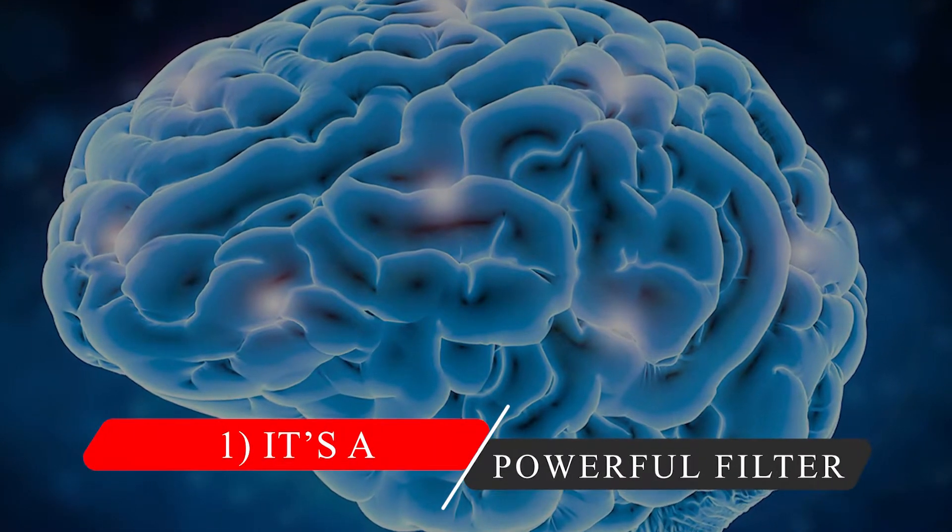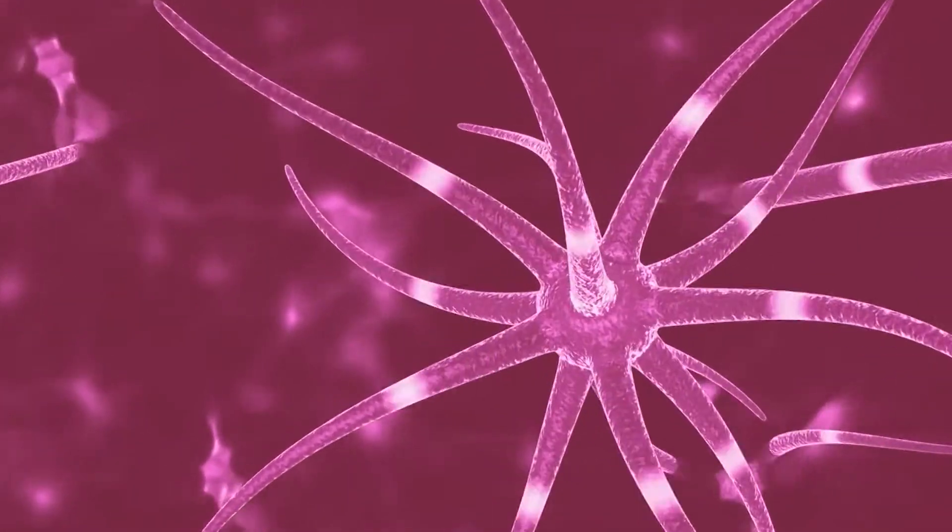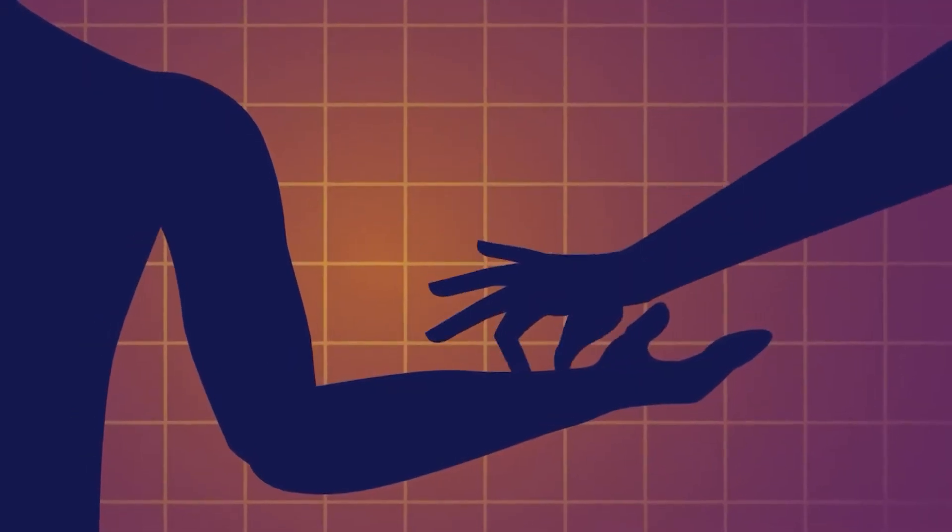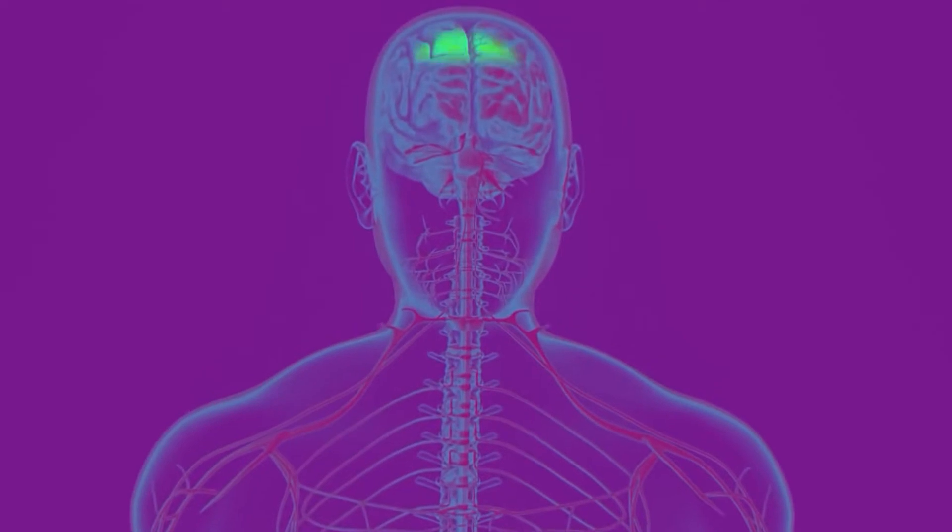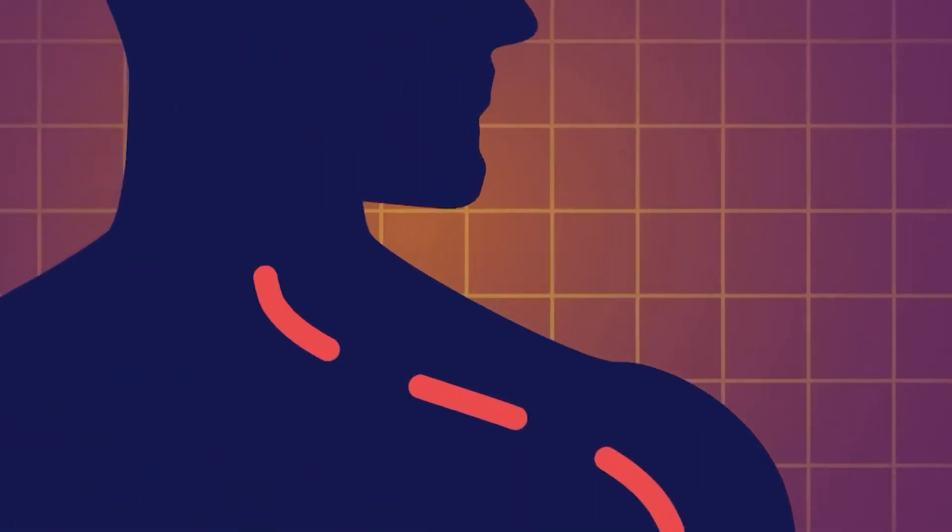1. It's a powerful filter. Anatomically, the reticular activating system is a bundle of nerves at the brainstem that filters out unnecessary data so we can focus on the important stuff. This system facilitates the functioning of attention and sensation.